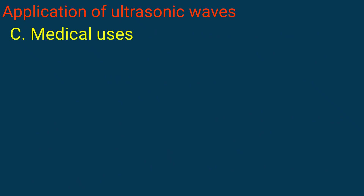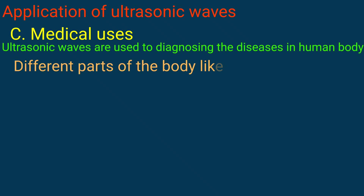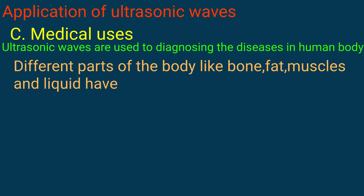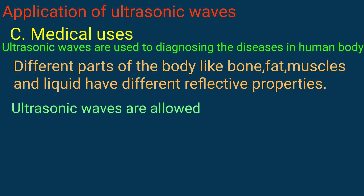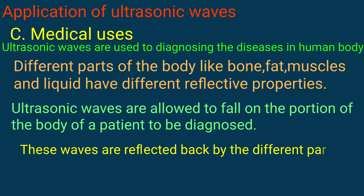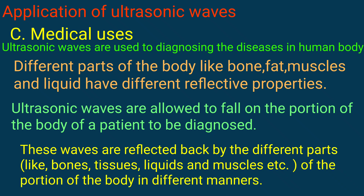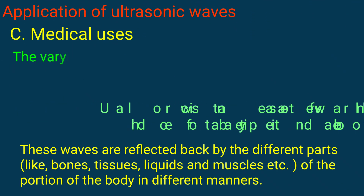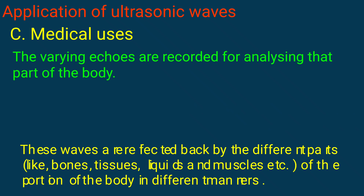Medical uses: Ultrasonic waves are used to diagnose diseases in the human body. Different parts of the body like bone, fat, muscles, and liquid have different reflective properties. Ultrasonic waves are allowed to fall on the portion of the body of a patient to be diagnosed, and these waves are reflected back by different parts like bones, tissue, and liquid muscles.